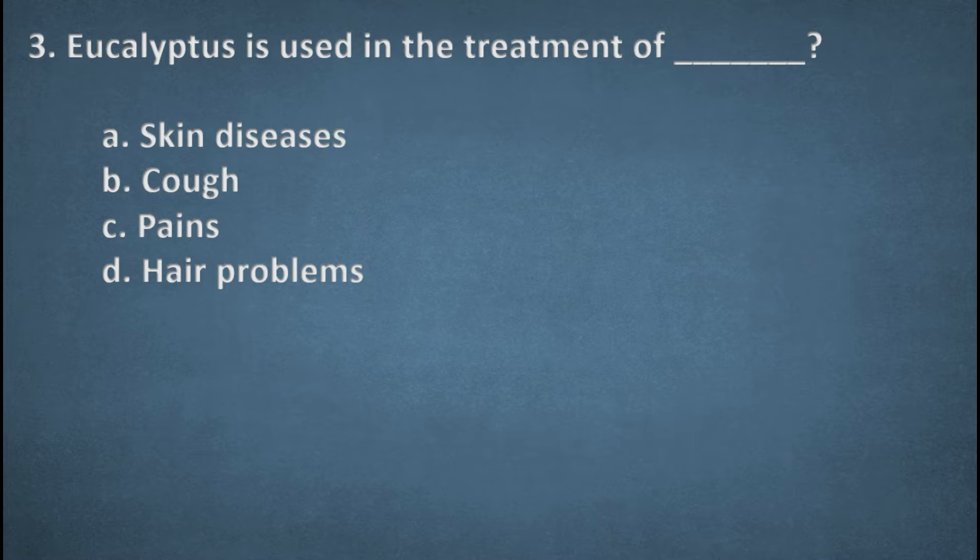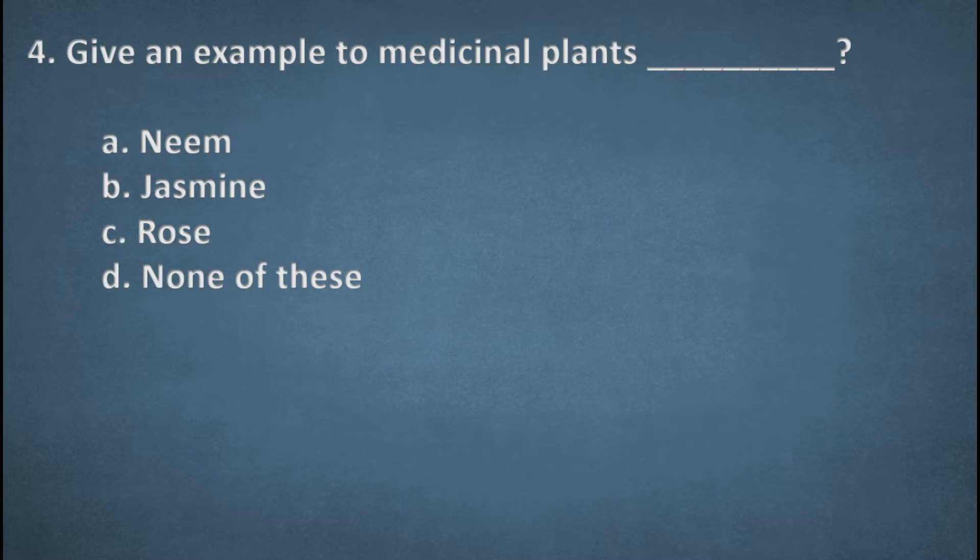Next one. Eucalyptus is used in the treatment of. Options: Skin diseases, Cough, Pains, Hair problem. The right option C, Pains. Next one. Give an example to medicinal plants. Options: Neem, Jasmine, Rose, None of these. The right option, Option A, Neem.